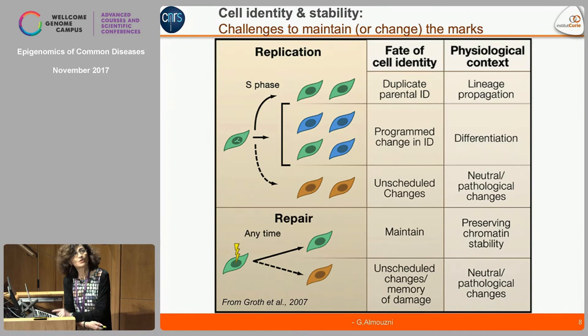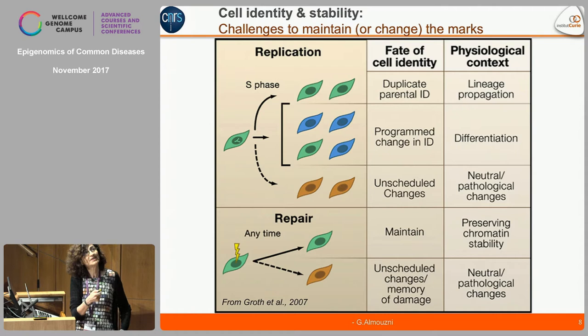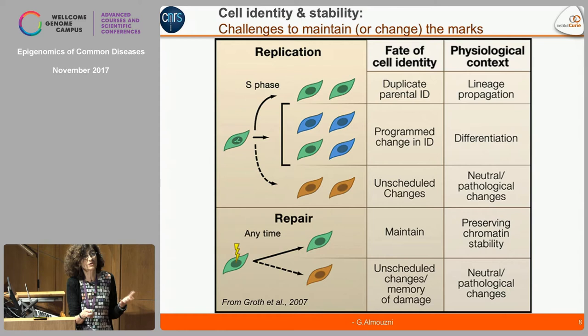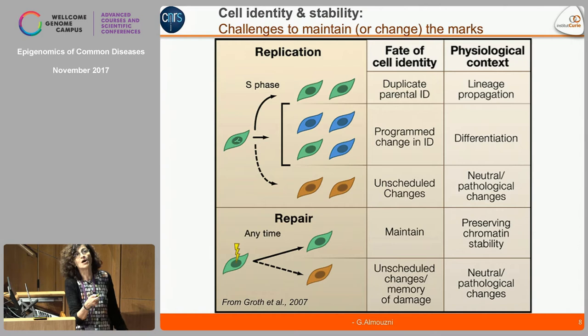When we think about cell identity and stability, there's a real challenge to maintain or change the marks in the organization. Replication is clearly a timing when there will be a window of opportunity for change, or an important time to duplicate the parental identity. You can think of that as potentially programmed changes in identity or unscheduled changes — one related to differentiation, others neutral or pathological, associated with problems seen in disease.